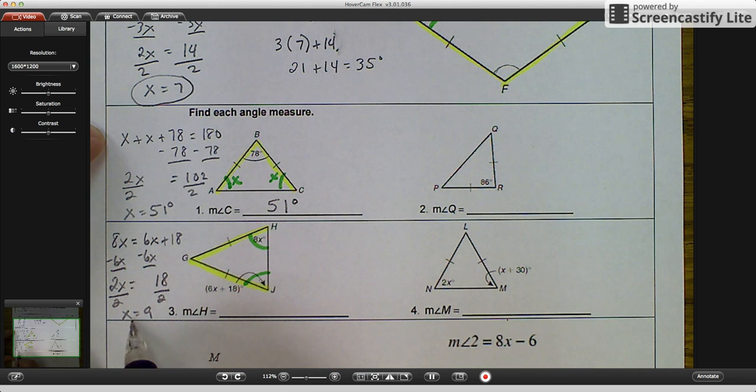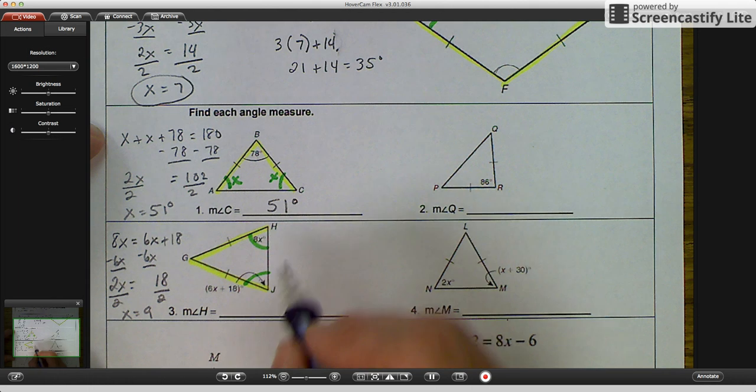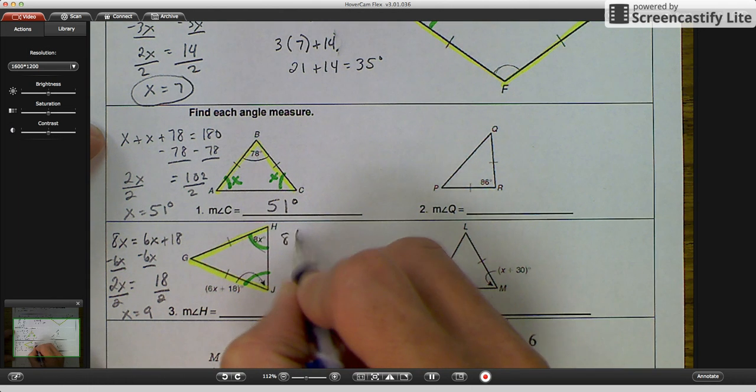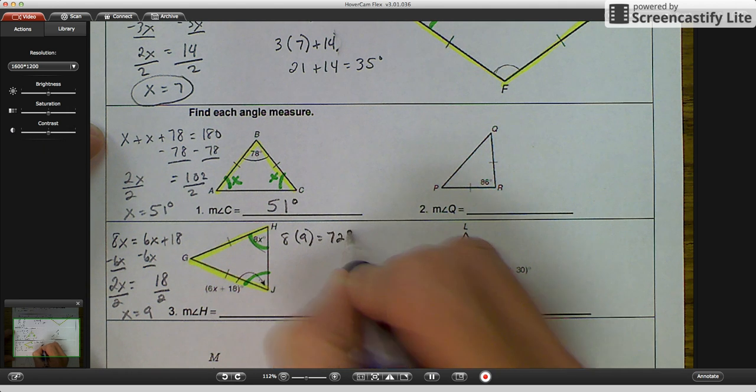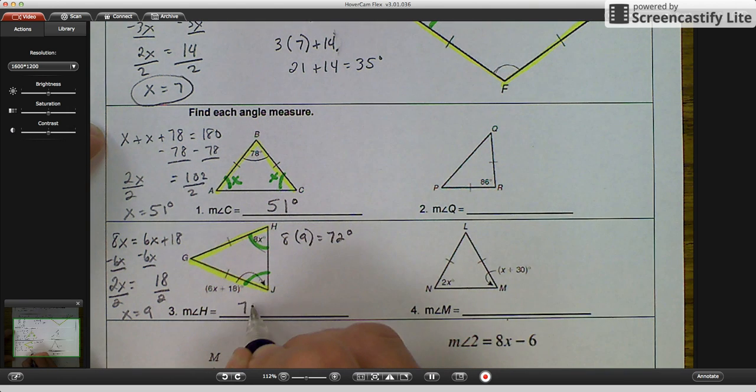So we know that X equals 9. And we're trying to find out the measurement of angle H. The measurement of angle H is 8X. So when I substitute the 9 back in, you get 72 degrees. So the measurement of angle H is 72 degrees.